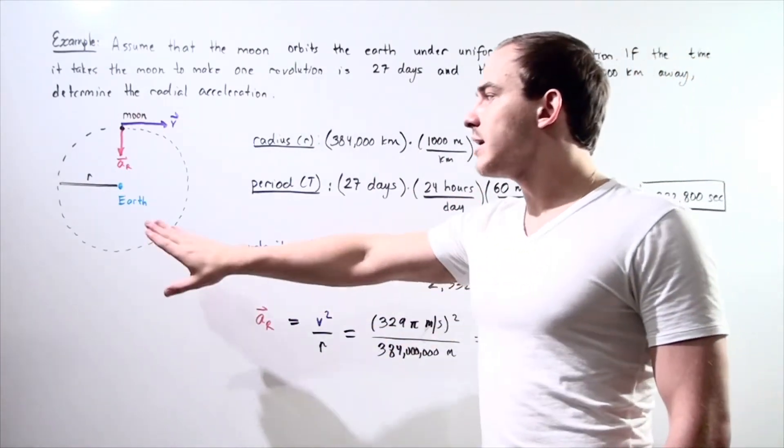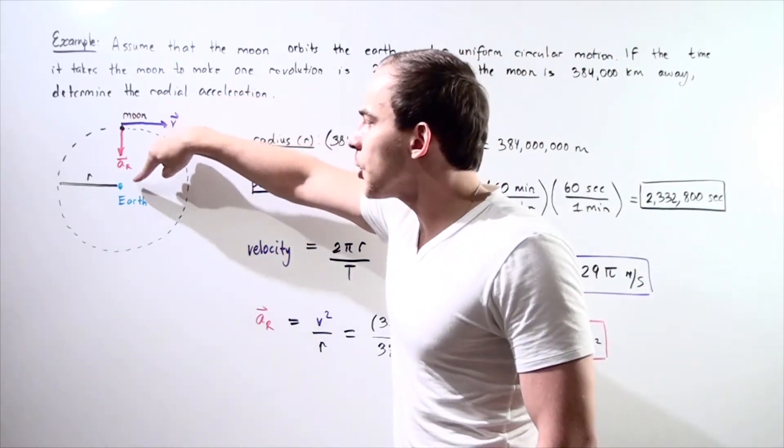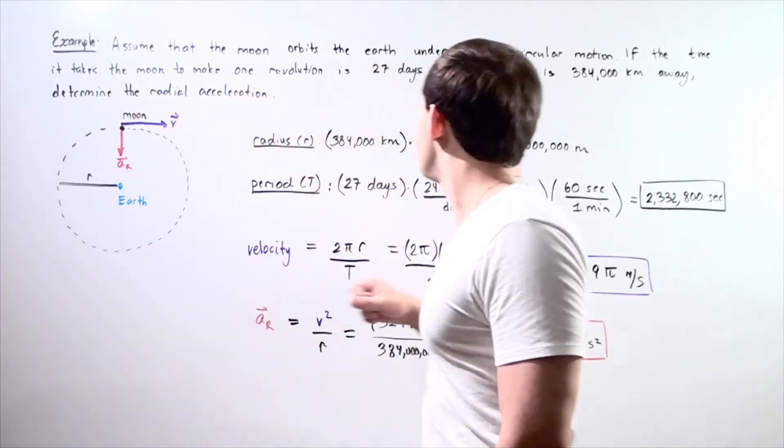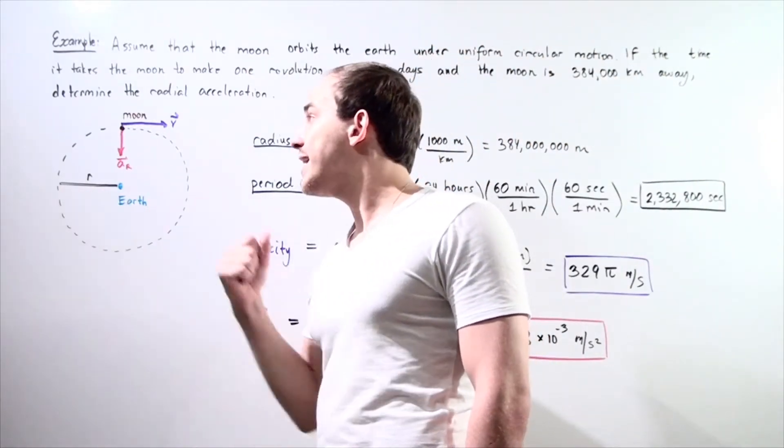Let's look at our diagram. At the center of our circular pathway, we have the Earth, which is found 384,000 kilometers away from the Moon. So that's our radius.